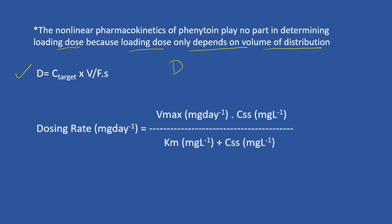Dose equals concentration multiplied by volume. The target concentration is 20, and the volume is 0.65 multiplied by the body weight of the patient. The loading dose should be 845 mg.